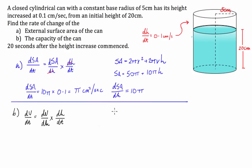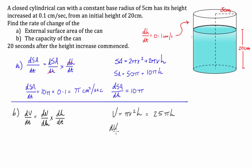In this case our radius is fixed at 5. So volume with respect to height is just going to be π(5²)h = 25πh. Therefore, if we take the derivative DV/DH, it's just going to be 25π.